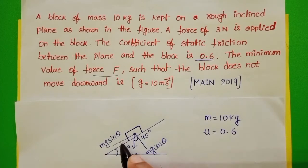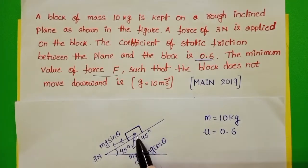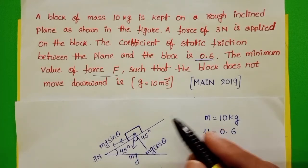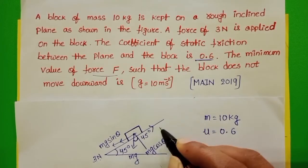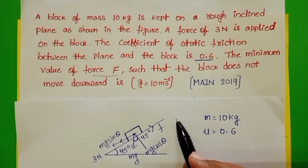And also 3 N of force is applied on the block in downward direction. Due to these two forces, Mg sin theta and 3 N, this block is moving in downward direction. When this block is moving in downward direction, frictional force acting in upward direction.